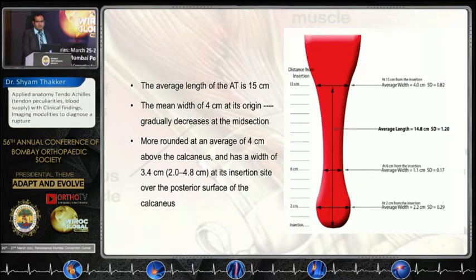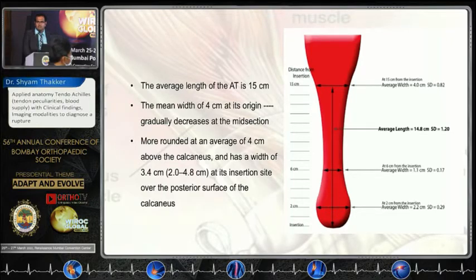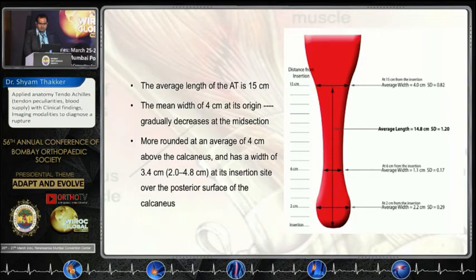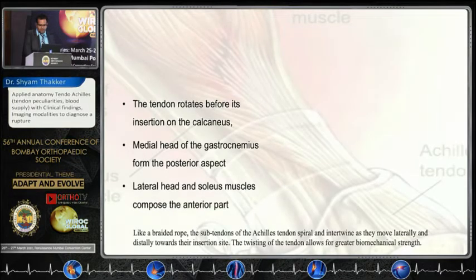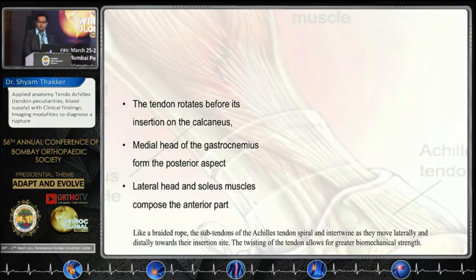The average length of the Achilles is approximately 15 cm. The main width is around 4 cm at its origin and gradually decreases in the midsection. It becomes wider again near its attachment, with an average width of around 3.4 cm. The tendon rotates before it attaches to the calcaneus — like a braided structure — in order to give increased biomechanical strength.